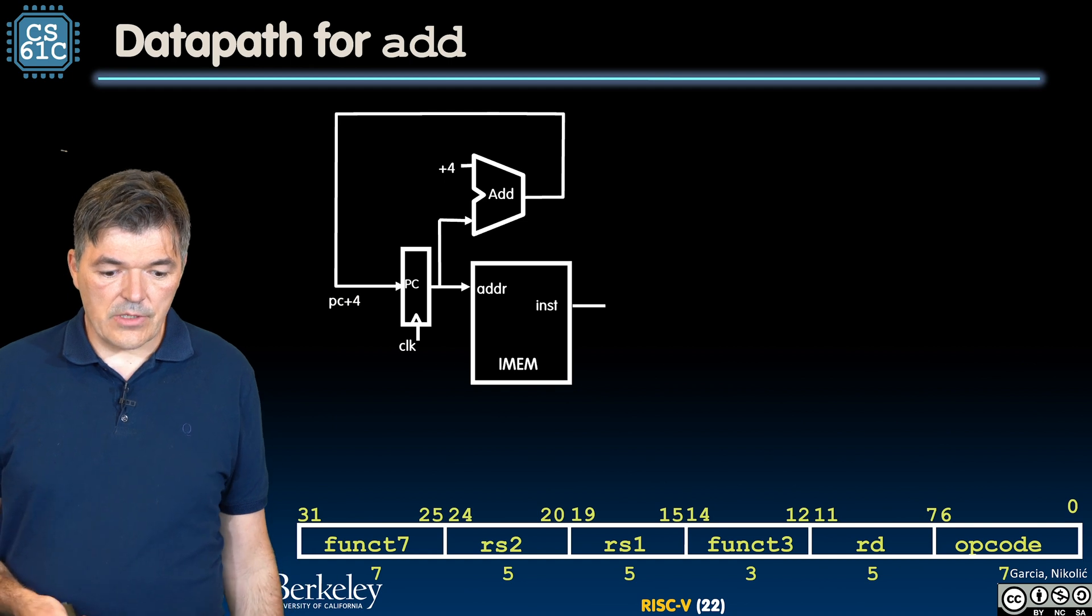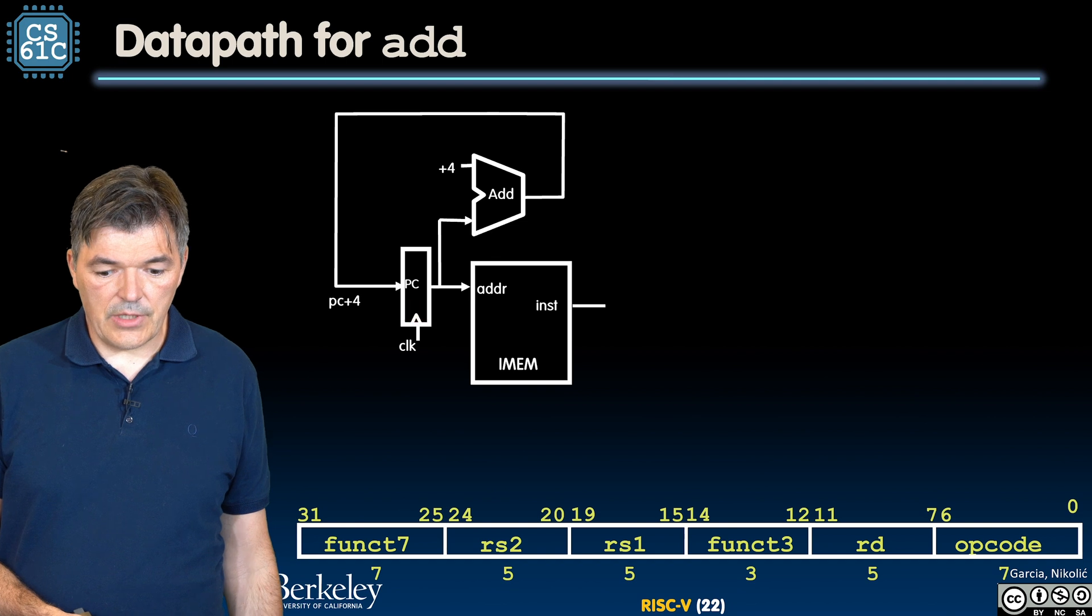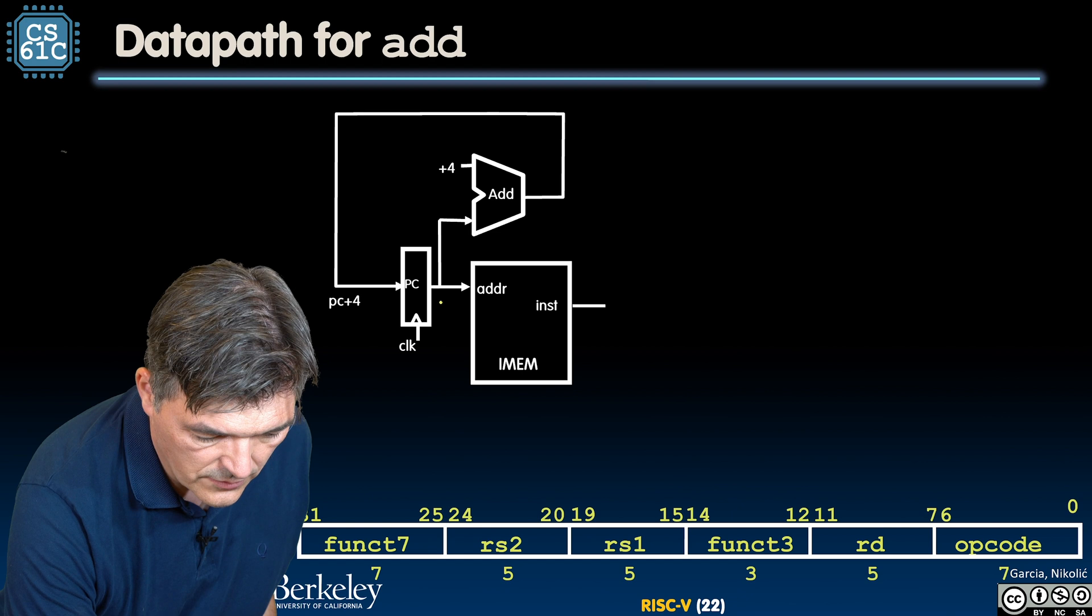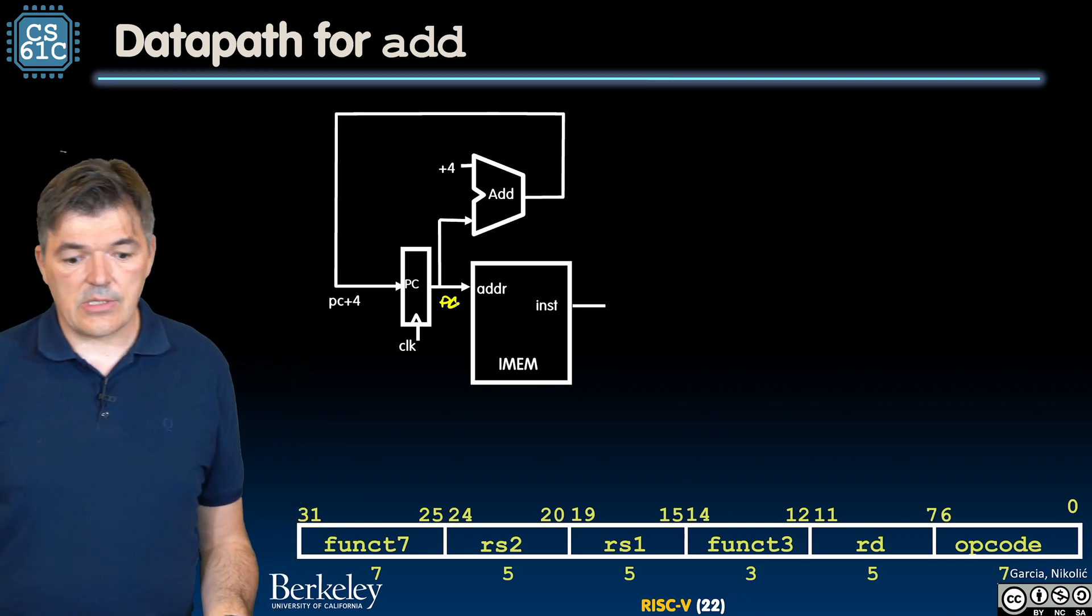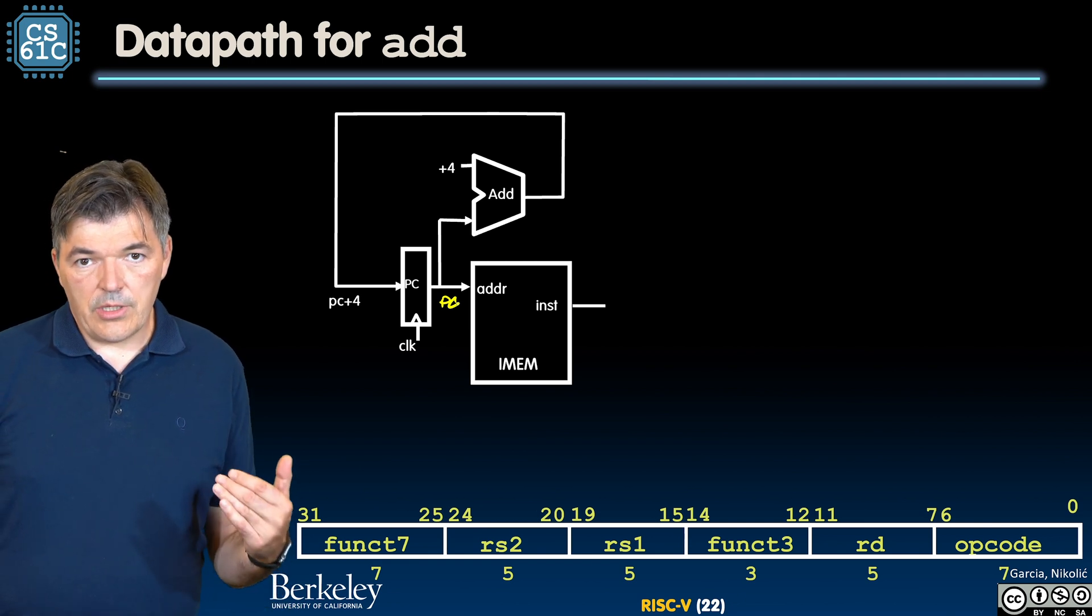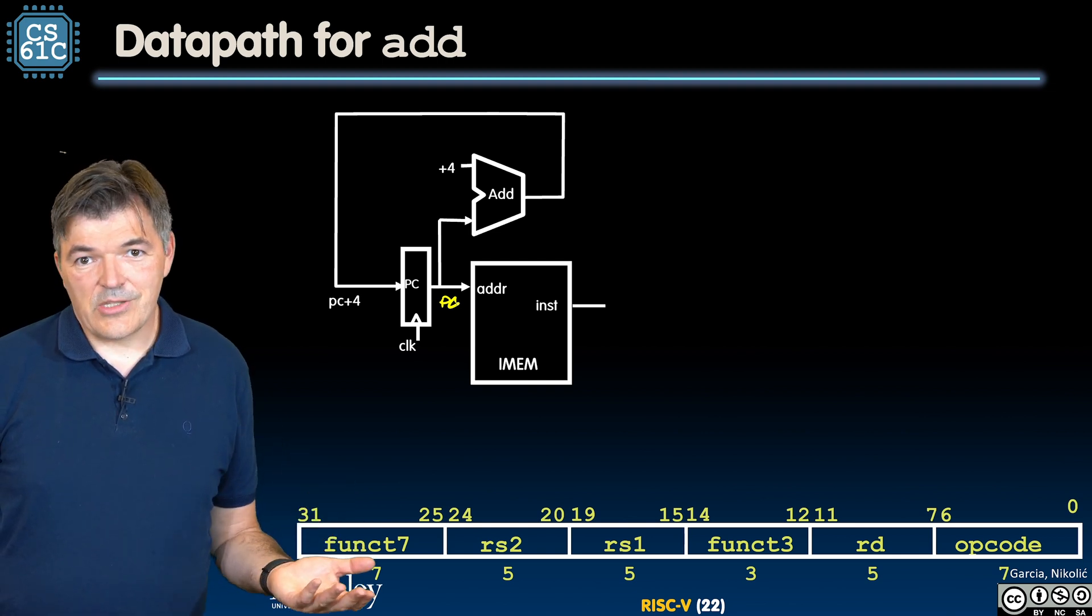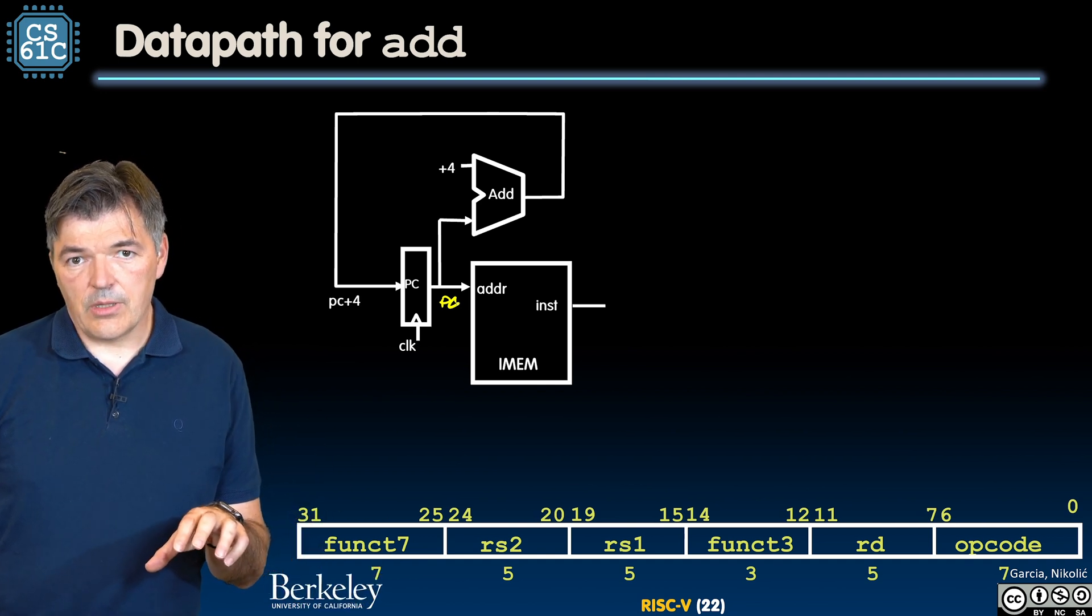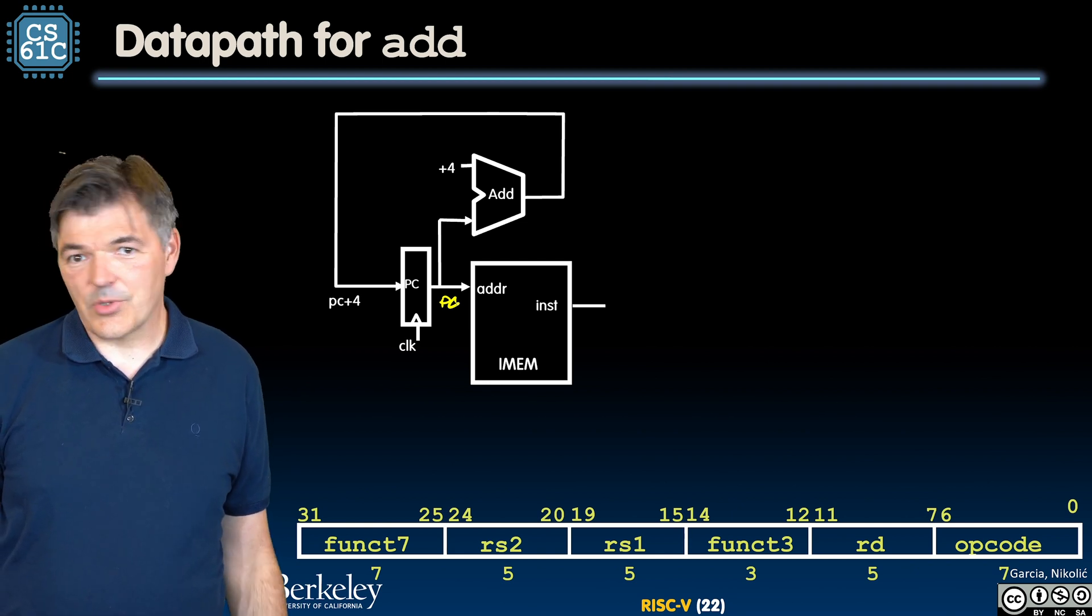So we need to build a datapath that is going to do these two state updates. First we have a program counter that has its own state. At the output of that program counter there is a current value of pc that points to the address in the instruction memory. By pointing to a particular instruction in the instruction memory we'll read its contents and that will be an instruction that we would like to execute.